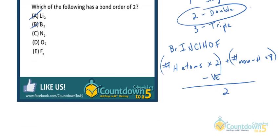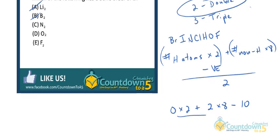So let's try nitrogen. Nitrogen has no hydrogen atoms, so that would be 0 times 2, plus the total number of non-hydrogen atoms, which is 2, times 8, minus the number of valence electrons. Each nitrogen atom has 5 valence electrons, so that would be 10. And we divide that all by 2.